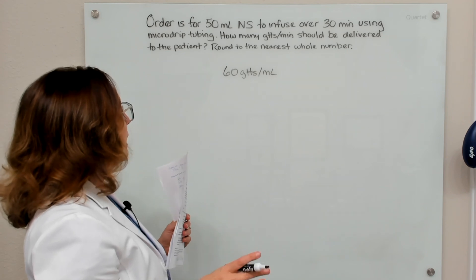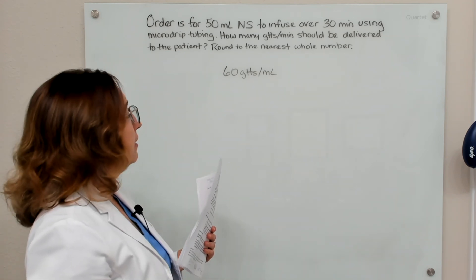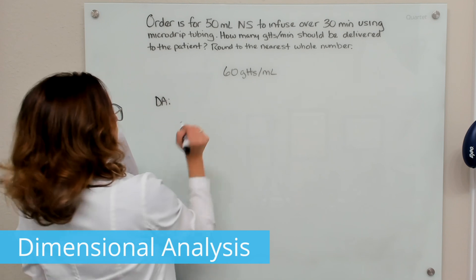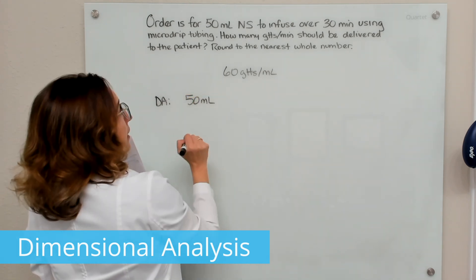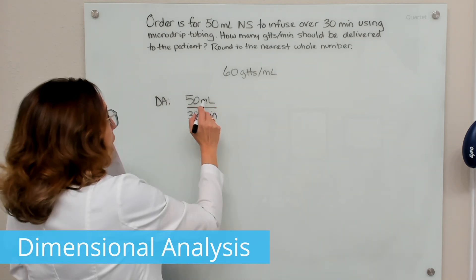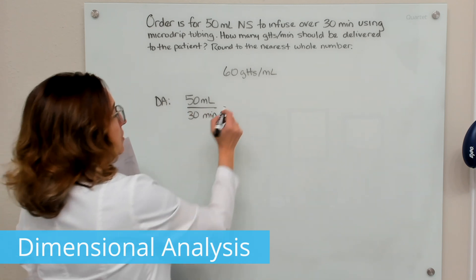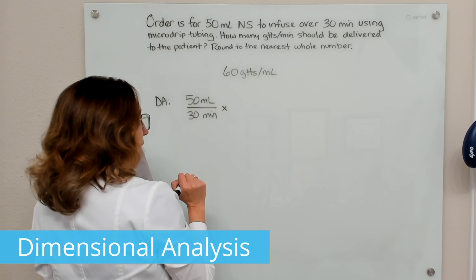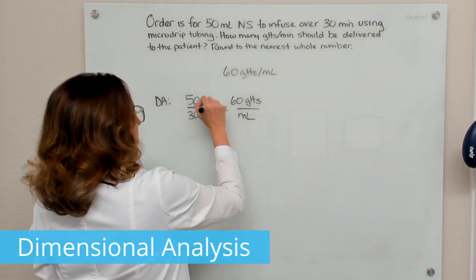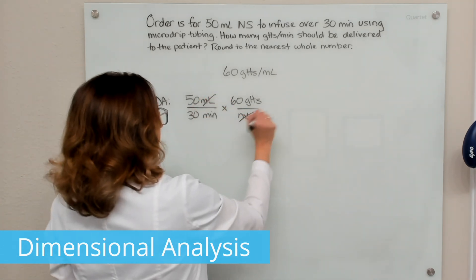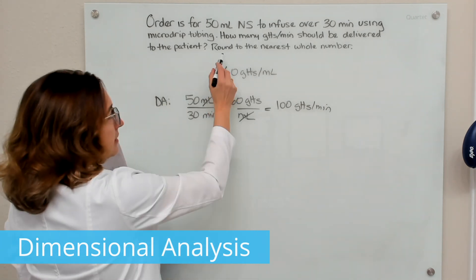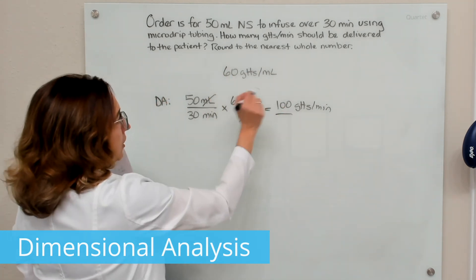We need to calculate the drops per minute to be delivered. Using dimensional analysis: we have 50 ml over 30 minutes, and we multiply by the drop factor of 60 drops per ml. The ml's cross off, and calculating gives us 100 drops per minute, which is already a whole number.